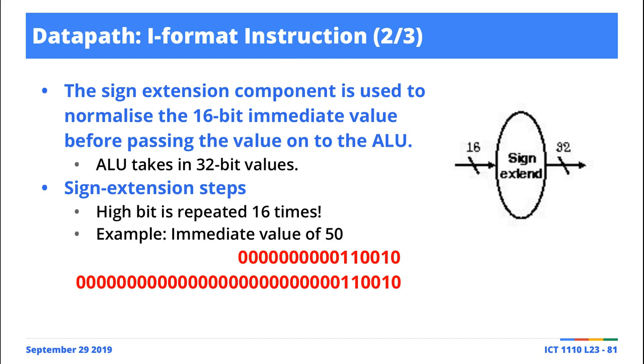The way sign extend works is you get the most significant bit and use it to pad the value with 16 of those entries. In this case, you notice we are padding this value with 16 zeros so that we come up with 32 bits. If you convert this value to decimal and the original to decimal, you get the same answer.